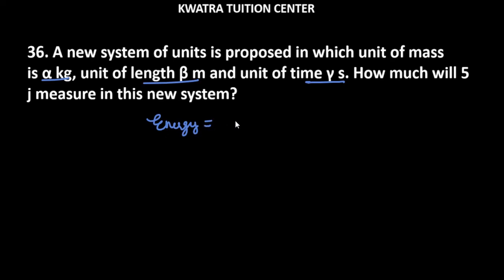If we talk about the dimensions of energy, it is M^1 L^2 T^(-2). Now the new system will be in terms of alpha, beta, and gamma.